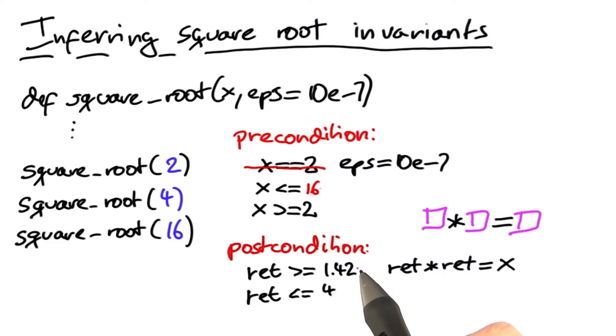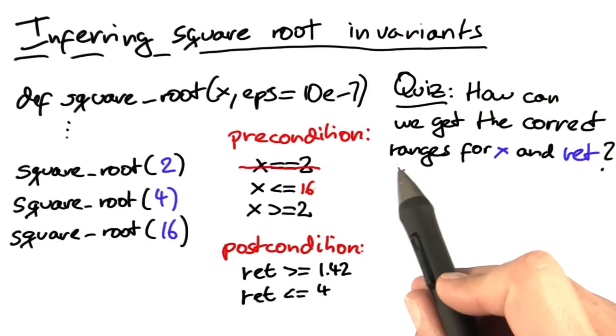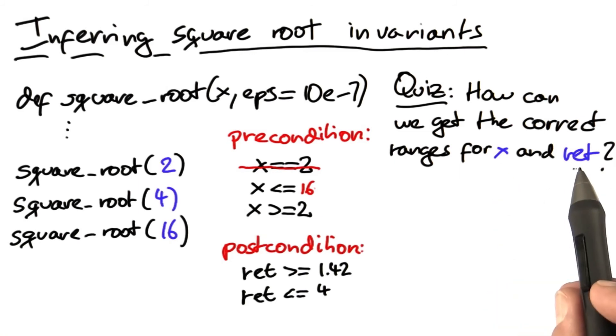So tools for dynamic inference of invariants can work well if they do have a good test suite in the beginning. How can we get the correct ranges for x and the return value?